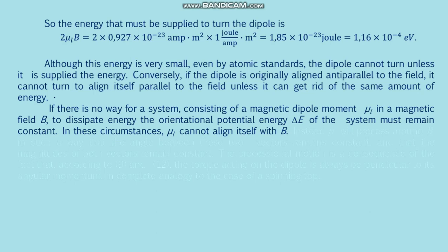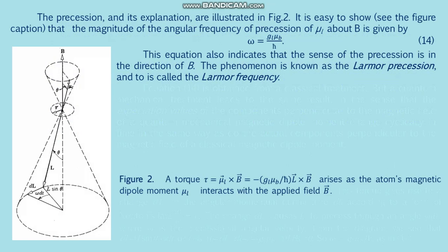If the dipole is originally aligned antiparallel to the field, it cannot turn to align itself parallel unless it can get rid of the same amount of energy. If there is no way for a system consisting of magnetic dipole moment μ_L in magnetic field B to dissipate energy, the orientational potential energy ΔE must remain constant. In these circumstances, μ_L cannot align itself with B; instead μ_L will precess around B such that the angle between the two vectors remains constant.